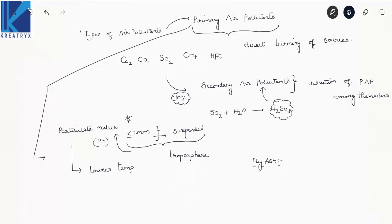During combustion of coal, impurities in coal fuse in suspension and float out of the combustion chamber with exhaust gases — those particles are called fly ash. The next constituent is black carbon.